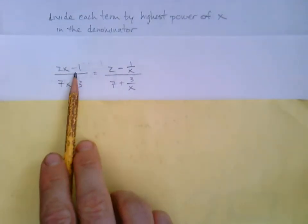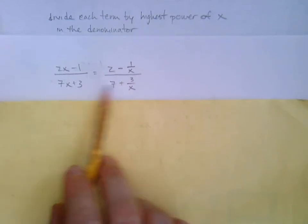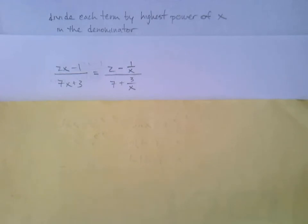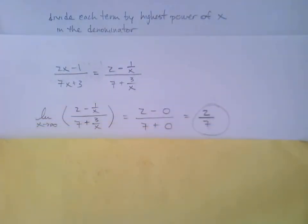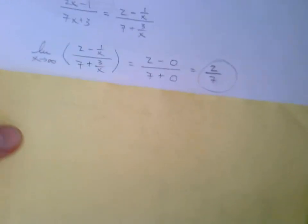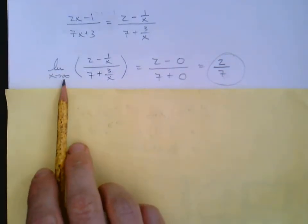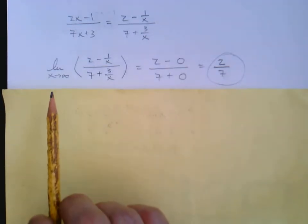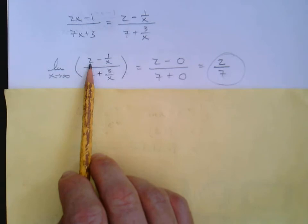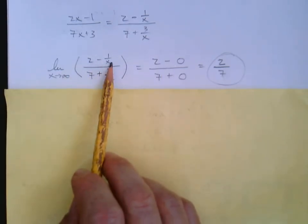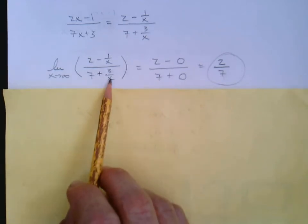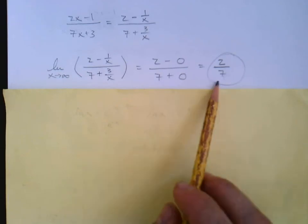That's algebraically equivalent. Now we perform the limit as x approaches infinity on this rewritten version. The limit of 2 is simply 2; 1/x approaches 0; the 7 stays 7; and 3/x approaches 0. So we get 2 over 7.